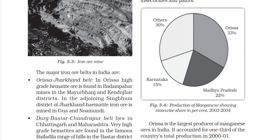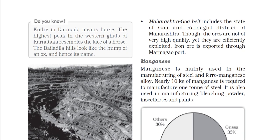Did you know that 'Kudre' in Kannada means horse? The highest peak of the Western Ghats in Karnataka resembles the face of a horse — that is how it got its name Kudremukh. Similarly, the Bailadila hills look like the hump of an ox, which is also known by that name.